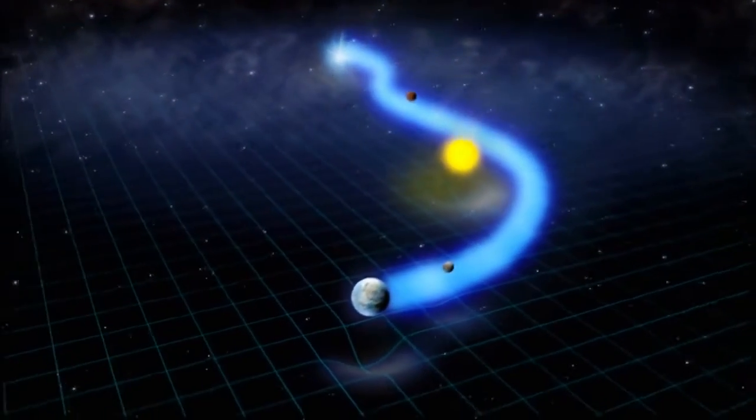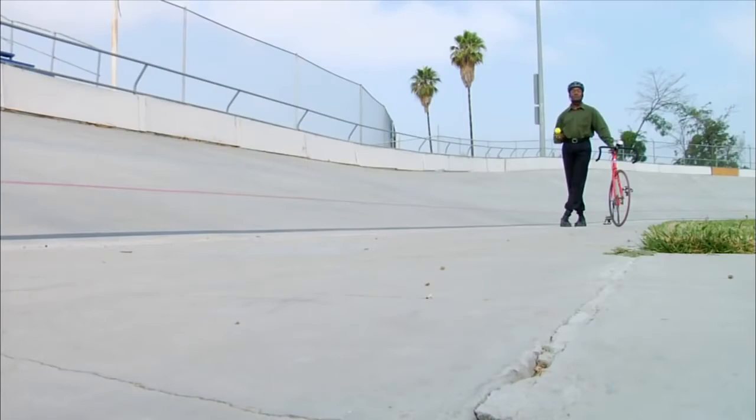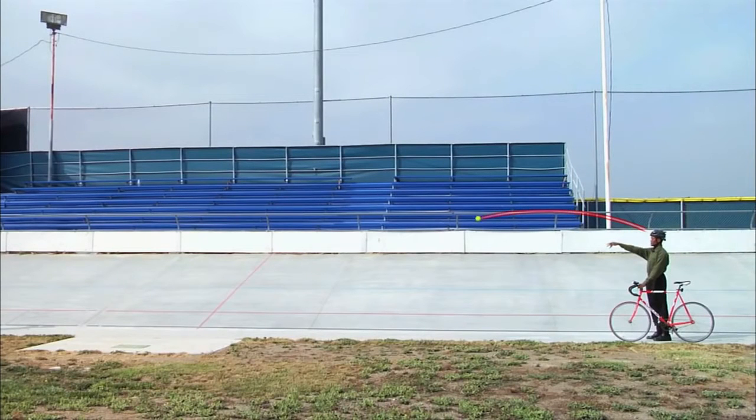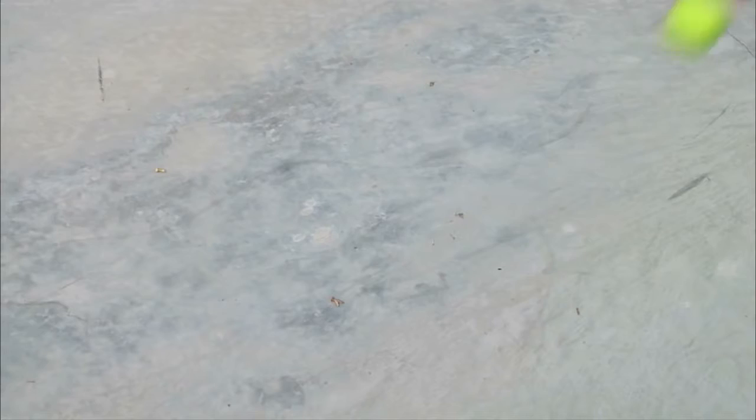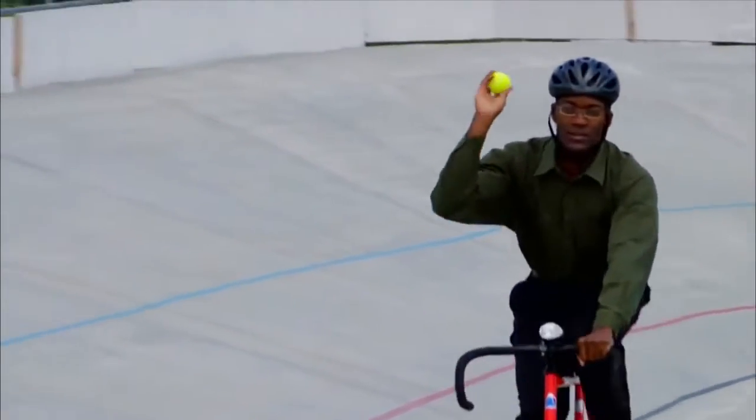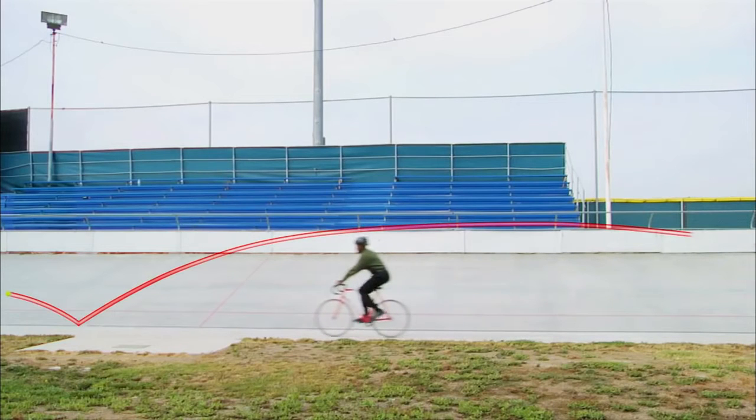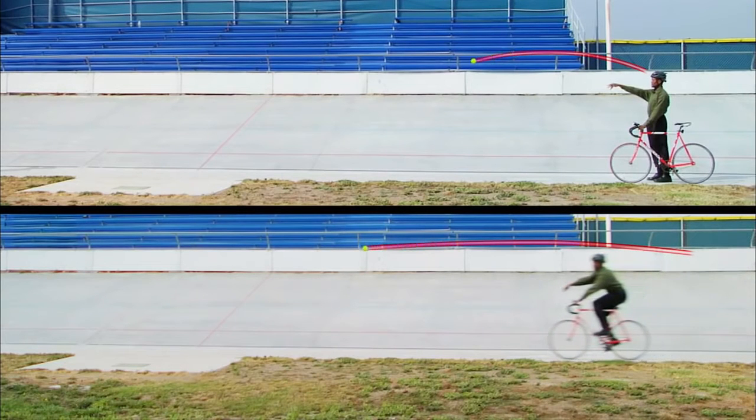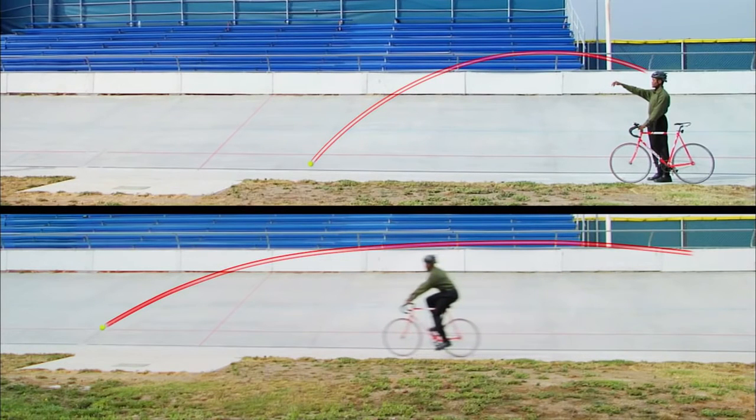We can begin to understand why the universe bends itself around light speed by joining physicist Clifford Johnson at a bicycle track, where a tennis ball will compete against a beam of light. If I throw an ordinary object like a tennis ball, I can throw it at a given speed, and it'll go a certain distance. This is the path of the tennis ball as Johnson throws it while he's standing still. It lands roughly halfway down the track. Next, he'll throw the ball again, but this time from a moving bike, with different results. If I throw the tennis ball at that same speed while riding the bike, it'll go faster because it's the speed of the tennis ball plus the speed of the bike, and so it'll go further. Compare the two tosses, and the difference is clear. The ball goes faster and farther when thrown from the moving bike. It makes perfect sense.